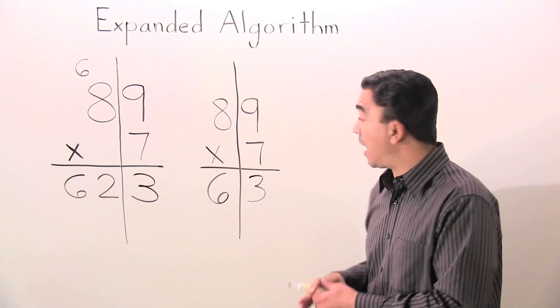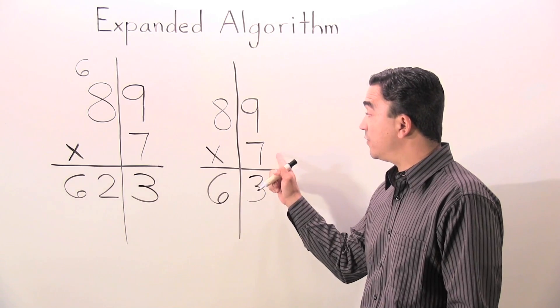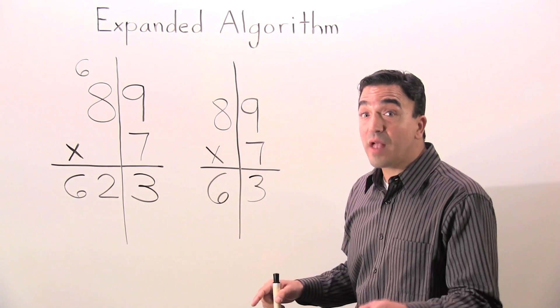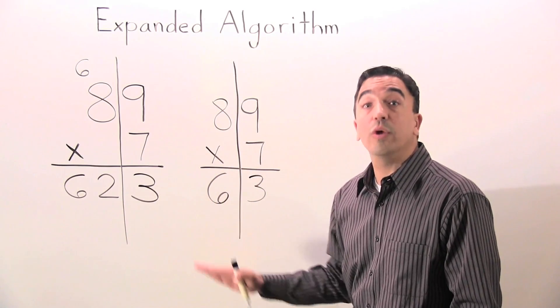In the expanded algorithm, I am not regrouping. So once again, I'm going to multiply 7 times 8. But it's not 7 times 8. It's the value of 8 in the 10s place, which is 80.